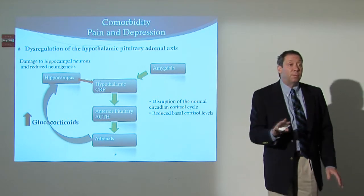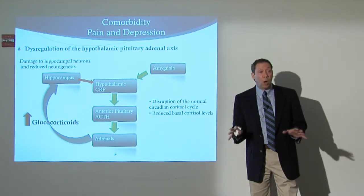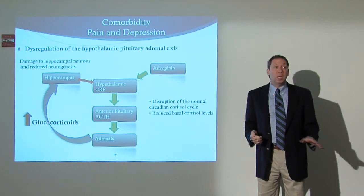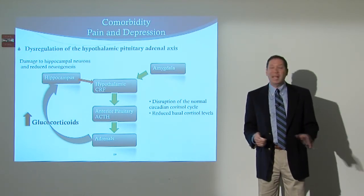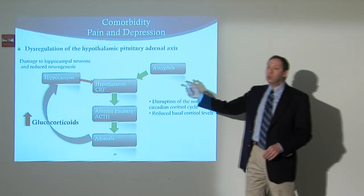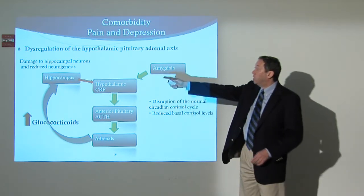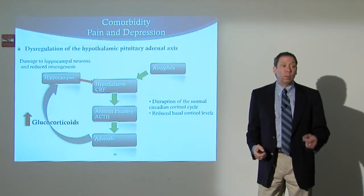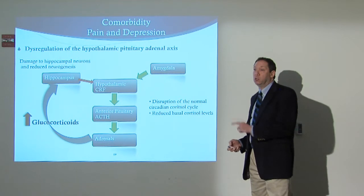There's a misperception that in terms of adrenal problems and low cortisol levels, the problem is in the periphery at the level of the adrenal gland. That's not where the problem is. The problem is in the central nervous system. What we see is damage to hippocampal neurons, reduced replenishment of hippocampal neurons — neurogenesis. The end result is a loss of sensitivity to glucocorticoids, and that is what causes the dysregulation. The problem is not peripheral; the problem is in the central nervous system.